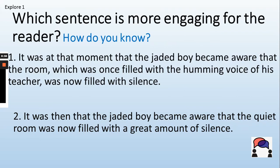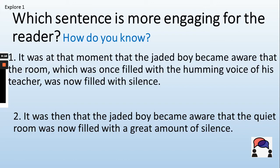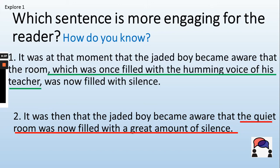Which sentence is more engaging for the reader? How do you know? Pause the video and have a look at both sentences. Example one: 'It was at that moment that the jaded boy became aware that the room, which was once filled with the humming voice of his teacher, was now filled with silence.' Example two: 'It was then the jaded boy became aware that the quiet room was now filled with a great amount of silence.' The second example uses a lot of detail but hasn't used parenthesis. The first uses a pair of commas to embed and add information. You might want to write down example one.